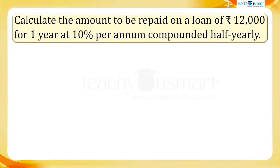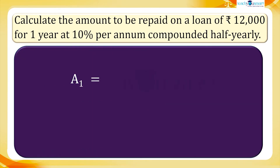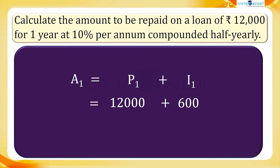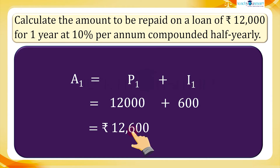Now the amount at the end of the first half year, A1 equals P1 plus I1, equals 12,000 rupees plus 600 rupees. That is, A1 equals 12,600 rupees. This is the principal for the second period.